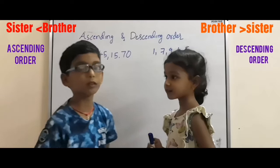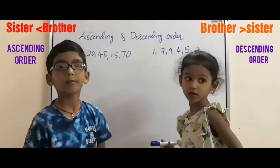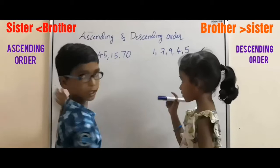Hi friends! Now I will explain to you what is ascending order and descending order. Descending order means big to small. Ascending order means small to big.